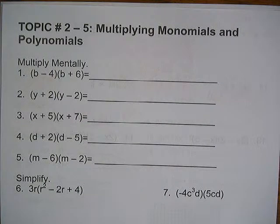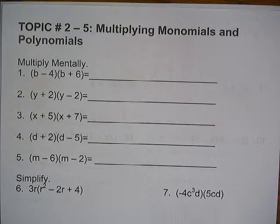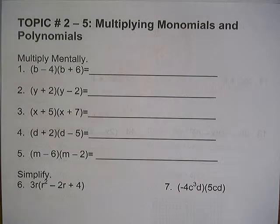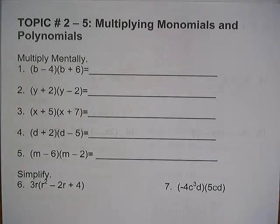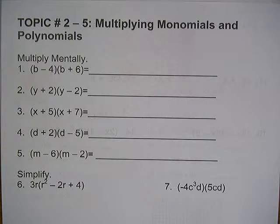Topic 2.5 is just a review of multiplying polynomials together. I'm going to do half of these first couple using FOIL, and I'm going to do half of them using the box. It doesn't matter which one you choose, but I want to make sure you know how to do both of them.